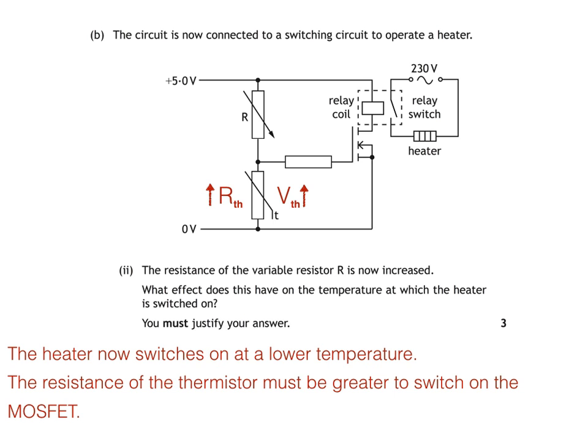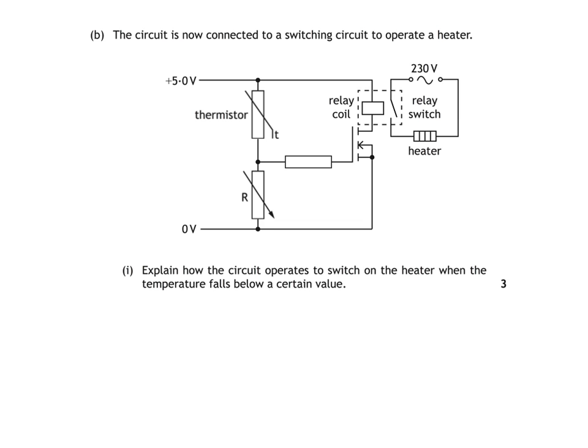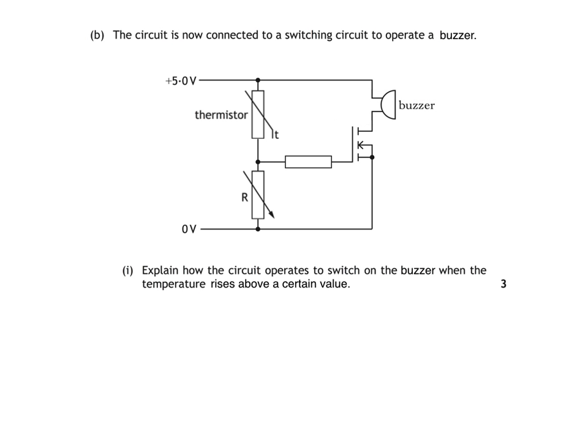What would happen if we switched the positions of the thermistor and variable resistor in B part 1? When we switch the positions of the variable resistor and thermistor, we get a circuit which would switch on the heater when the temperature rises above a certain value. Now we've got a heater which switches on when it gets hot, which isn't much use, so we'll swap it for a buzzer. This circuit could be part of a fire alarm or placed inside a fridge to warn that the temperature is too high.